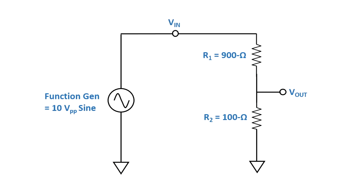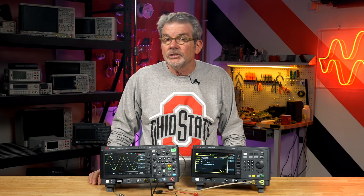In the simple two-resistor resistive divider circuit we've been measuring in earlier lessons, the gain and phase of this circuit is constant across all frequencies, at least ideally. The transfer function is simply R2 divided by R1 plus R2, which is an absolute gain of 0.1 and phase of 0 degrees. The logarithmic gain is 20 times the log of 0.1, which is minus 20 dB.